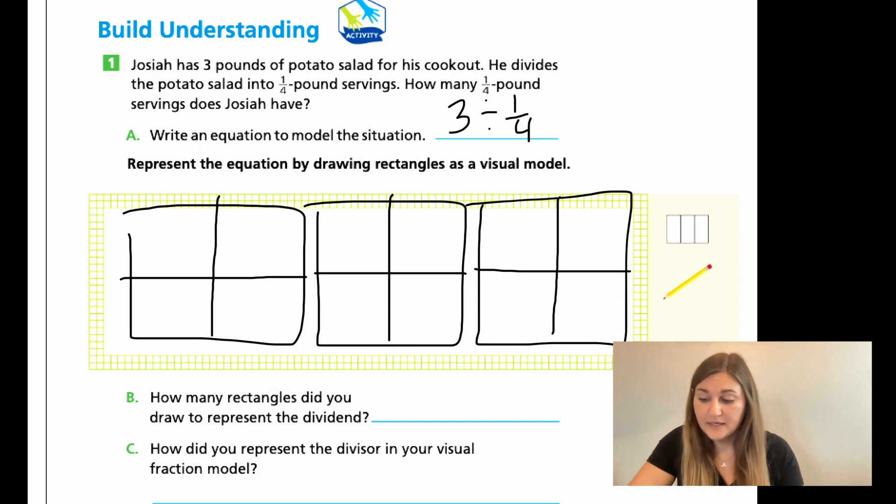So there are my three pounds and I'm just going to cut them into fourths like I did before. Now for B, it says, how many rectangles did you draw to represent the dividend? Remember the dividend was the total that we started with. So how many rectangles did we draw? Well, we did one, two, and three. We did three rectangles.